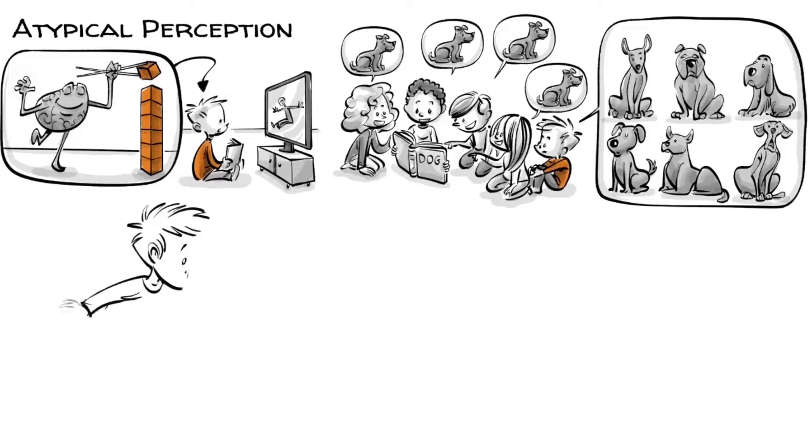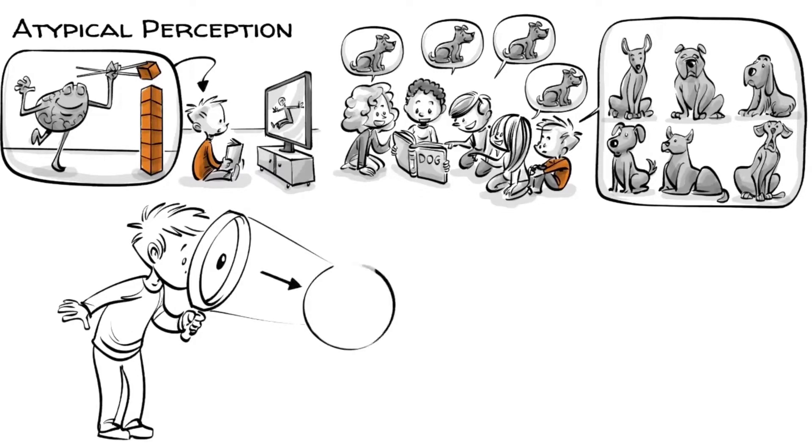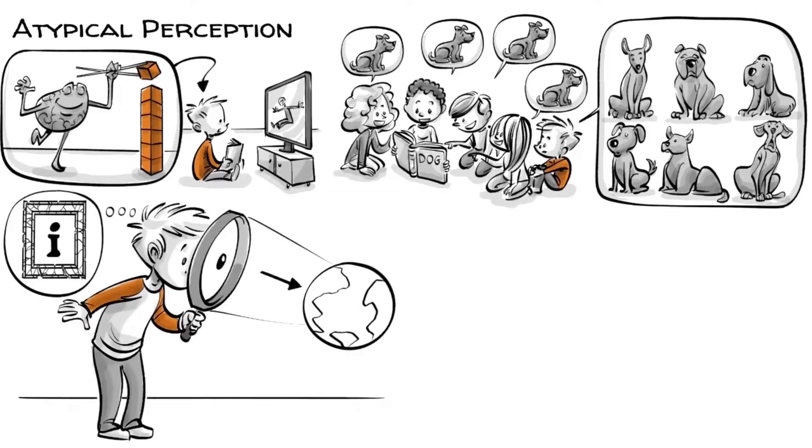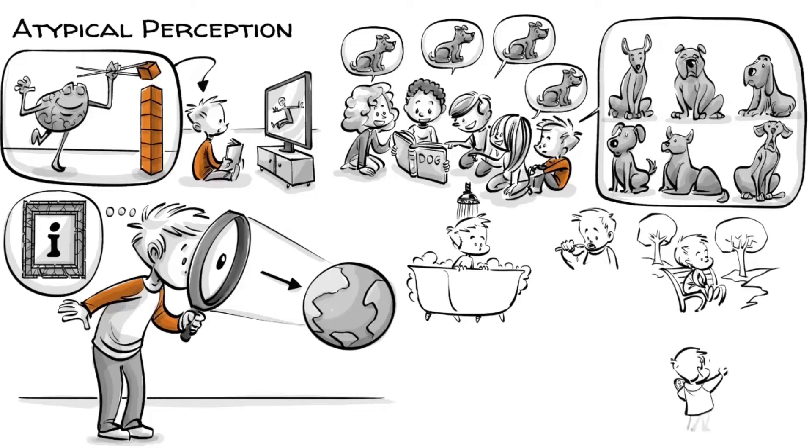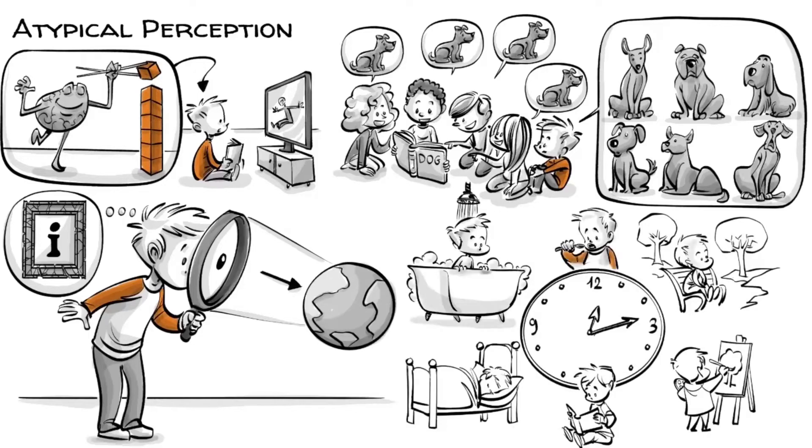His attention to detail and inability to generalize makes Timo more objective in his perception of the world and less prone to a framing bias. However, it also makes all sorts of new experiences incredibly complex, which is why he loves to follow a rigid daily routine to limit his sensory input.